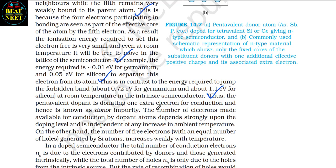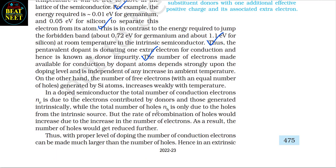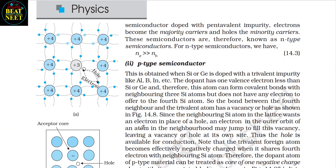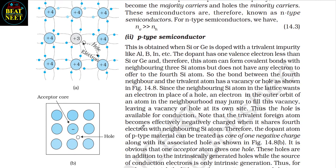The pentavalent dopant is donating one extra electron for conduction and hence is known as donor impurity. The number of electrons made available for conduction depends strongly upon the doping level and is independent of any increase in ambient temperature. On the other hand, the number of free electrons (with an equal number of holes) generated intrinsically by silicon atoms increases weakly with temperature. In a doped semiconductor, the total number of conduction electrons is due to electrons contributed by donors and those generated intrinsically, while the total number of holes is only due to the intrinsic source. With proper level of doping, the number of conduction electrons can be made much larger than the number of holes. Hence, in an extrinsic semiconductor doped with pentavalent impurity, electrons become the majority carriers and holes the minority carriers. These are therefore known as N-type semiconductors, where ne > nh.